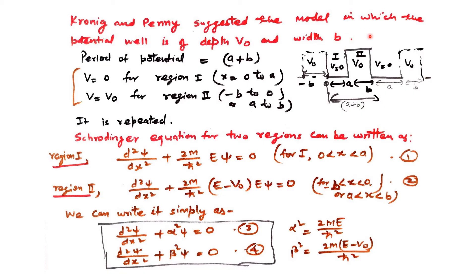Kronig and Penney suggested there is a potential well of depth V₀ with width b, and the distance between two nuclei is a, so the period is a plus b. We take two regions: in the first region it is a potential well where V equals zero, from zero to a. In the second region, from minus b to zero, it is a potential barrier of height V₀, where V equals V₀.